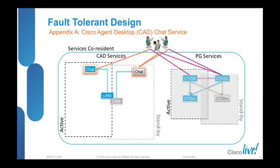The next service is the Chat service. As you can see in this visual representation, when agents log in, they will have two connection endpoints: one to the PG services or CTIOS, and the other to the CAD services through Chat. If a supervisor is logging in, the supervisor would not connect to any PG or CTI service — rather, the supervisor will only initiate a connection into the Chat service.